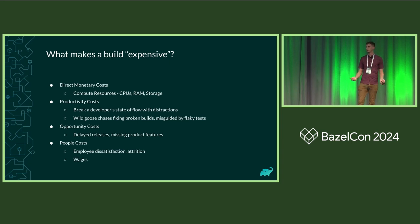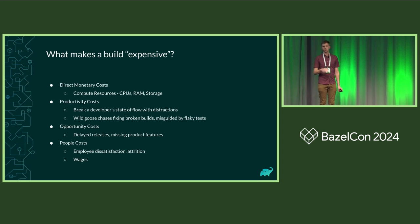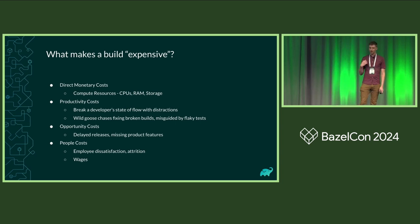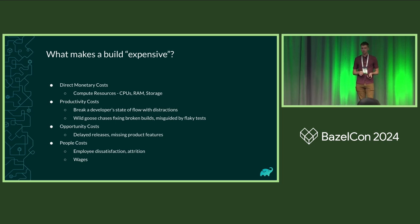Then there are people costs. The frustration of losing productivity and missing release cycles can create employee dissatisfaction, maybe ultimately leading to attrition. But there's the obvious thing: wages. The developers you support are likely the most expensive asset your company is spending money on. This doesn't mean you shouldn't optimize your compute resources, but it does highlight how important developer productivity is to your bottom line.